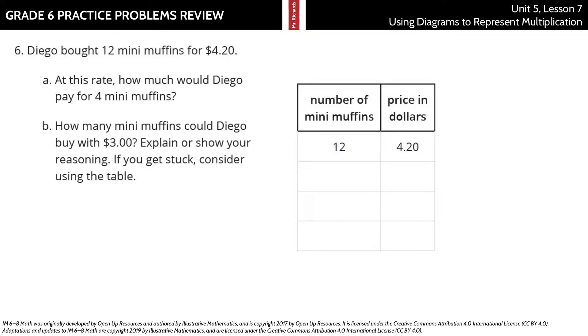And then Diego bought 12 mini muffins for $4.20. At this rate, how much would Diego pay for 4 mini muffins? Well, I would simply, if I'm getting to 4 mini muffins, that means I'm dividing by 4. And so I can take $4.20 and divide by 4. Now, decimal division will be coming up here in a future lesson. But using a calculator for right now, this is $1.05 for the 4 mini muffins.